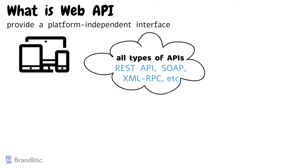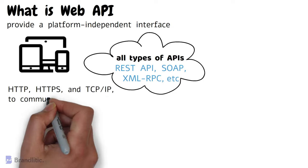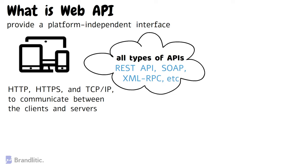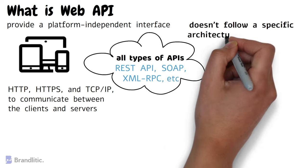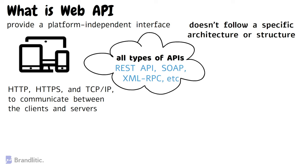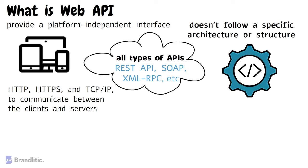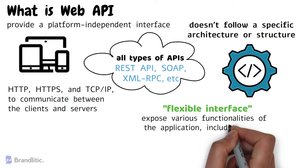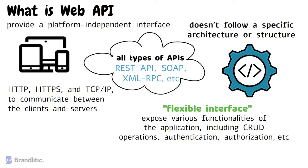Web API uses different protocols, including HTTP, HTTPS, and TCP/IP to communicate between clients and servers. Unlike REST API, Web API doesn't follow a specific architecture or structure. Instead, it can be designed using any technology or architecture depending on the requirements. One of the key features of Web API is that it provides a flexible interface that can be used by various clients, and it allows developers to expose various functionalities of the application, including CRUD operations, authentication, and authorization.